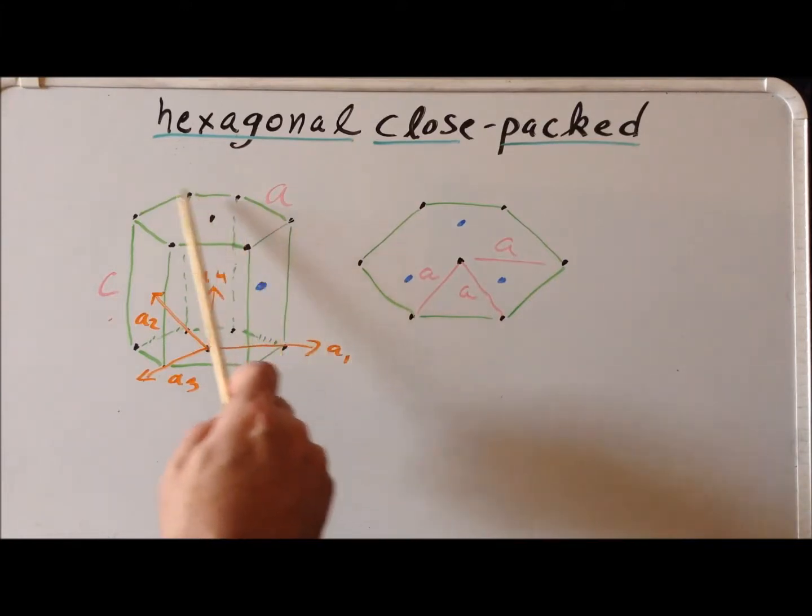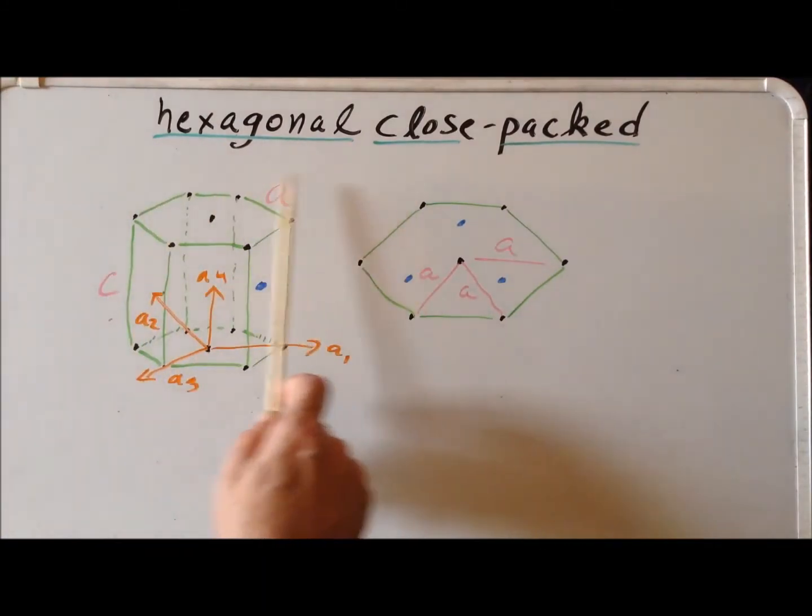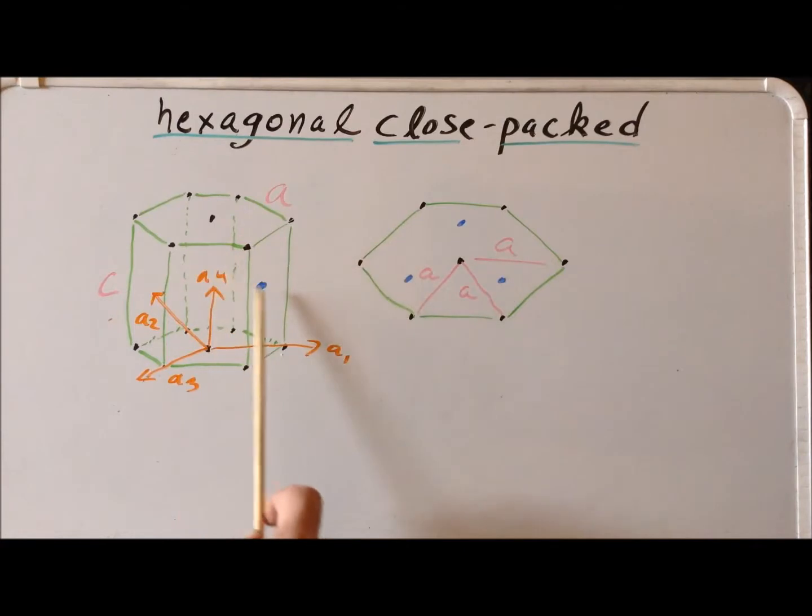here because they are not on the same plane as the atoms that are colored in black on the (0001) plane. They are below the surface. And how far are they below the surface?